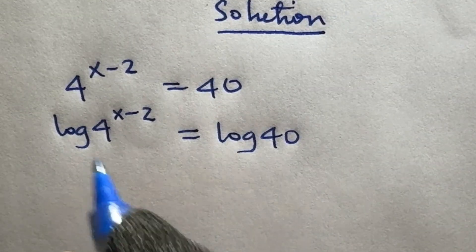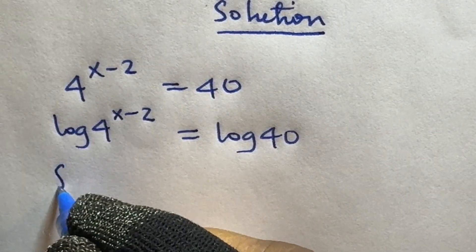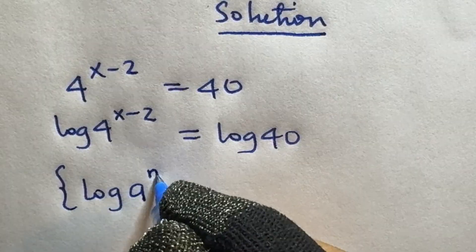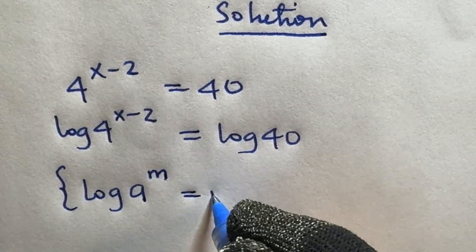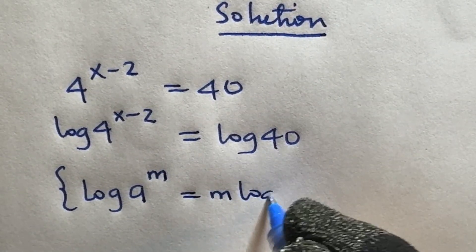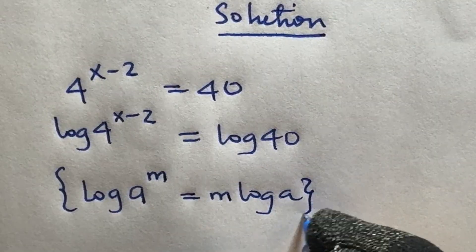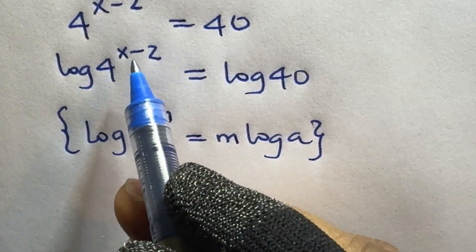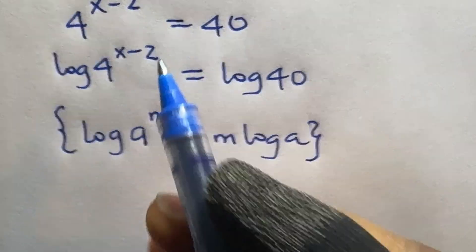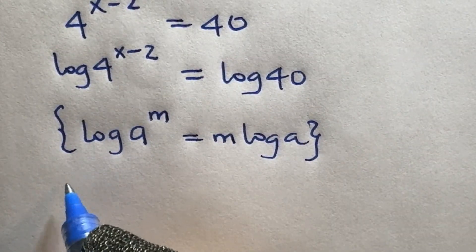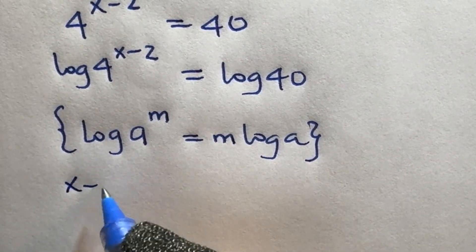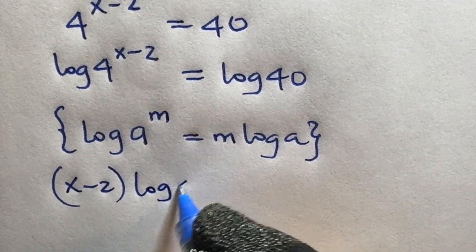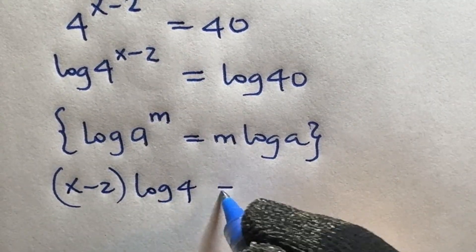By the logarithm rule, log a raised to power m is m log a. Therefore our m in this problem will be x minus 2, so we say x minus 2 times log 4 is equal to log 40.